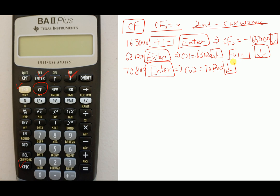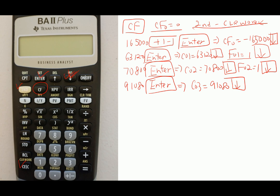Press down and leave F02 equal to 1. Press down. Enter the last cash flow, C03, as 91,080 and press Enter. You have C03 equals 91,080. Press down and leave F03 equal to 1. All cash flows are now entered: CF0 is negative 165,000, C01 is 63,120, C02 is 70,800, and C03 is 91,080.